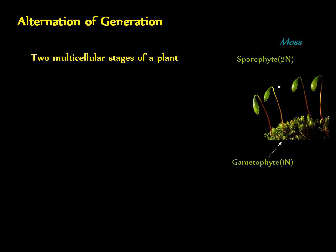In angiosperms, for example, the gametophyte can be less than three cells in size, while the sporophyte is the larger, more noticeable stage. In vascular plants, the gametophyte would be dependent on the sporophyte for survival, rather than the other way around as in moss.